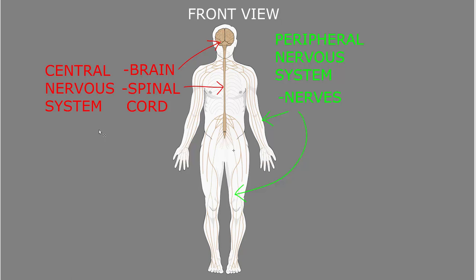The structure of the nervous system is divided into two main parts: the central nervous system, which is mainly the brain and the spinal cord, and the peripheral nervous system, which is almost everything else — in particular the nerves that travel throughout the body, connecting it back to the central nervous system.